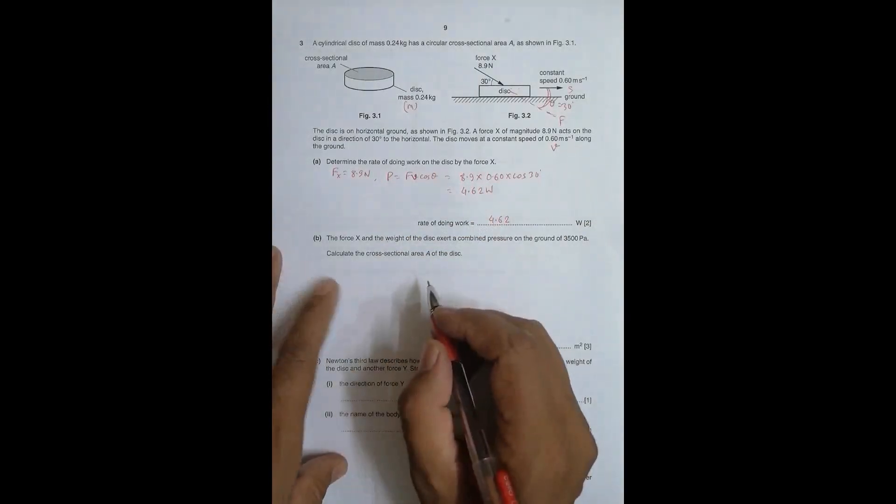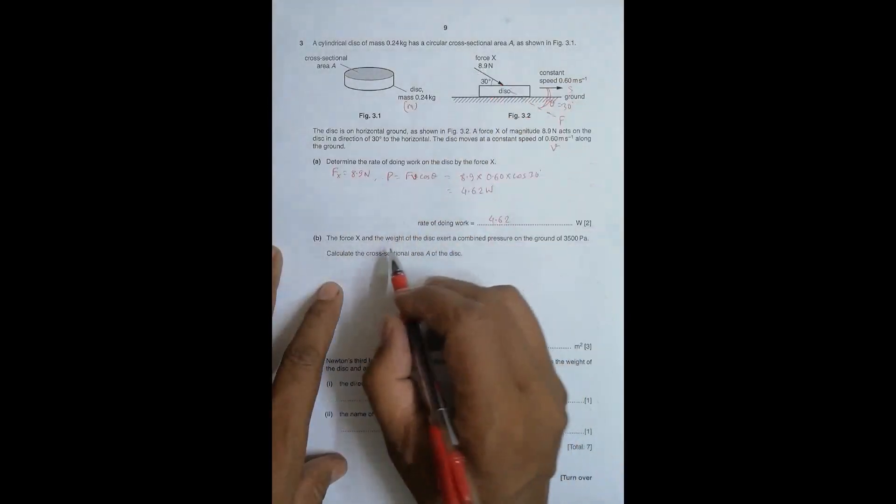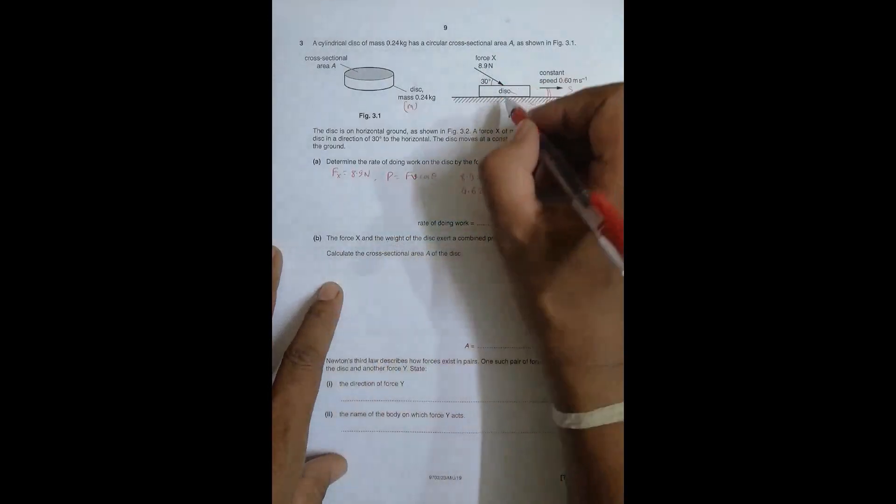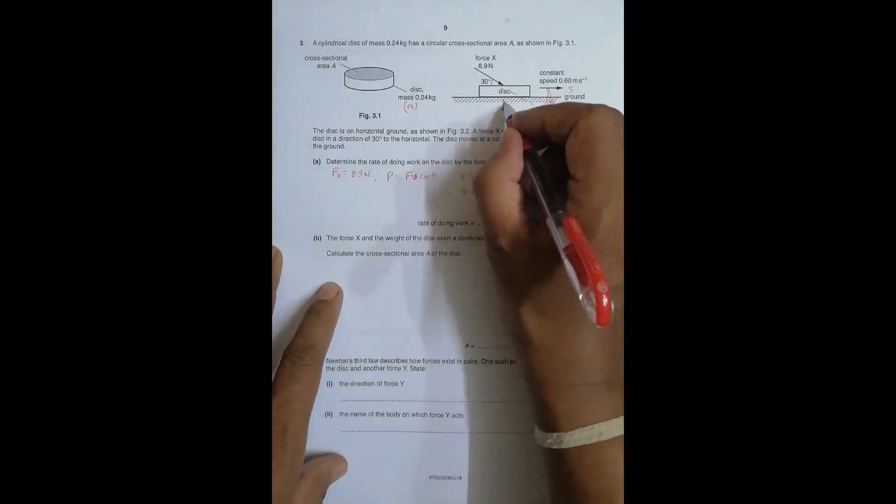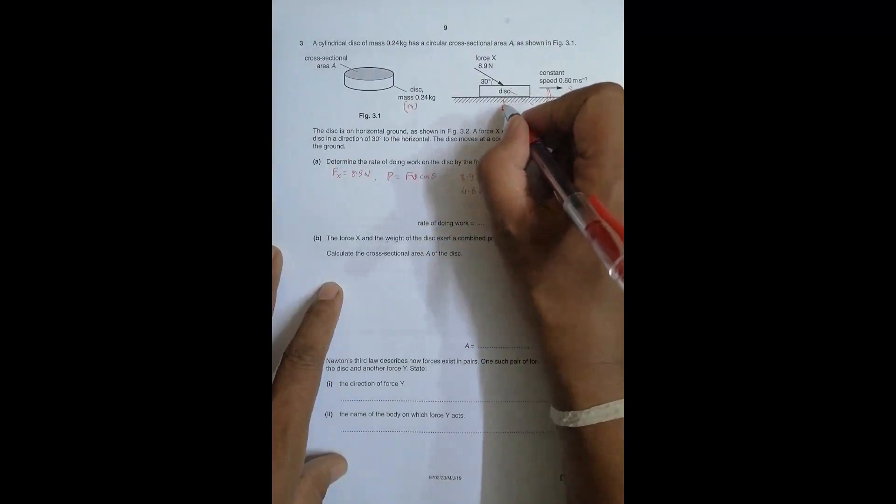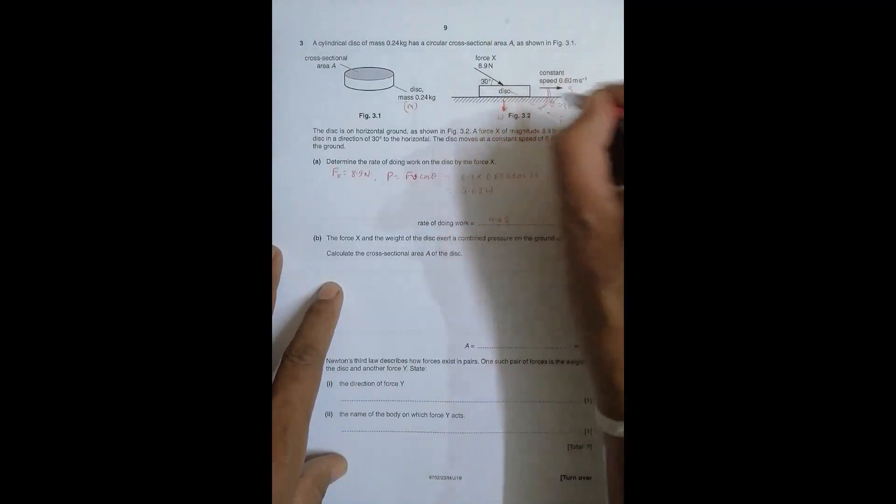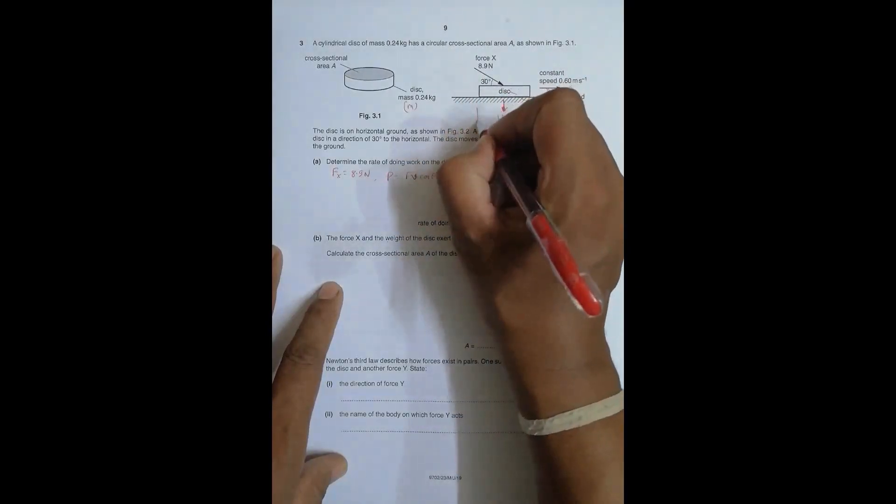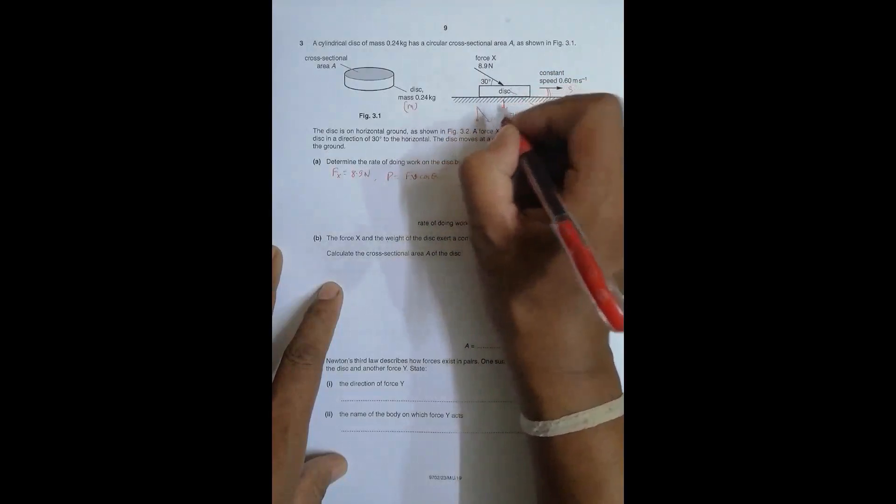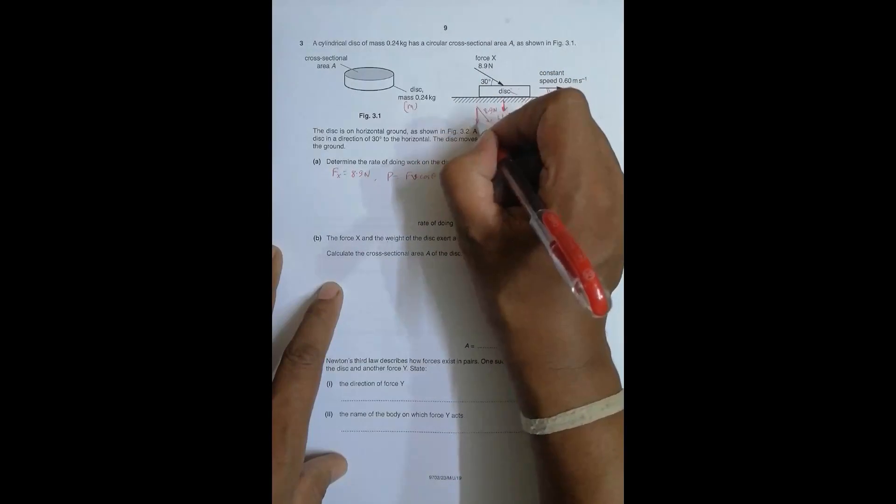Now this force X and the weight of the disk exert a combined pressure on the ground. So here we have two forces acting: one is the weight of course, and the other is the vertical component of this force - the vertical component of this thing.